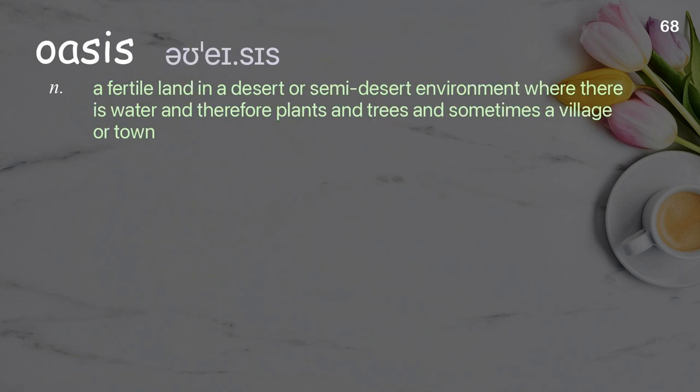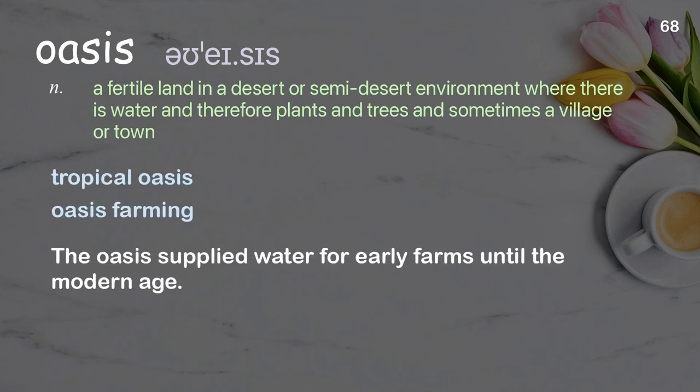Oasis: a fertile land in a desert or semi-desert environment where there is water and therefore plants and trees, and sometimes a village or town. Examples: Tropical oasis. Oasis farming. The oasis supplied water for early farms until the modern age.